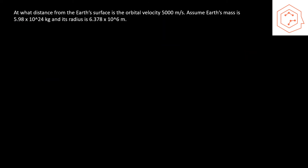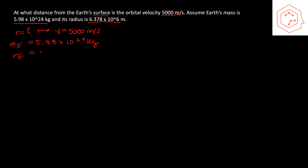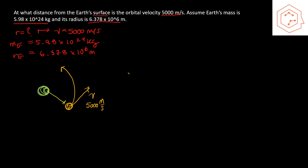For question three, we need to find the distance from Earth's surface where the orbital velocity is 5,000 m/s. Earth's mass is 5.98×10²⁴ kg and its radius is 6.378×10⁶ m. We set up a diagram with a planet and an orbiting object at velocity 5,000 m/s, and we need to find the orbital radius r.